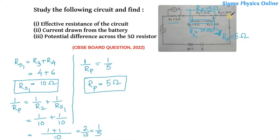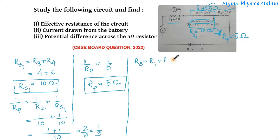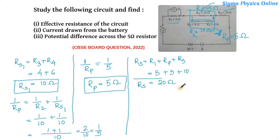Now we observe that R1, Rp, and R5 are all connected in series. To find the effective resistance of the entire circuit, we solve for resistors in series: effective resistance equals R1 plus Rp plus R5. R1 is 5 ohm, Rp is 5 ohm, and R5 is 10 ohm. So the total effective resistance of the entire circuit is 20 ohm.